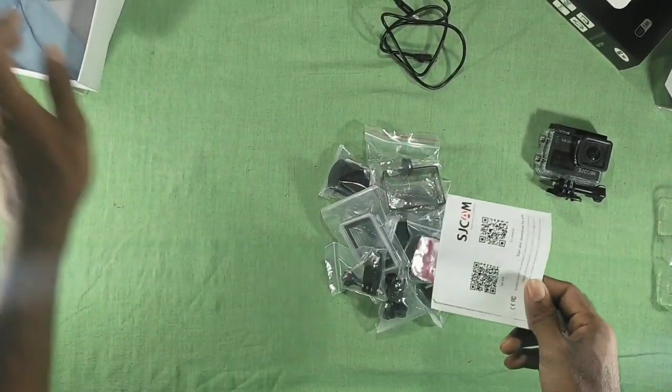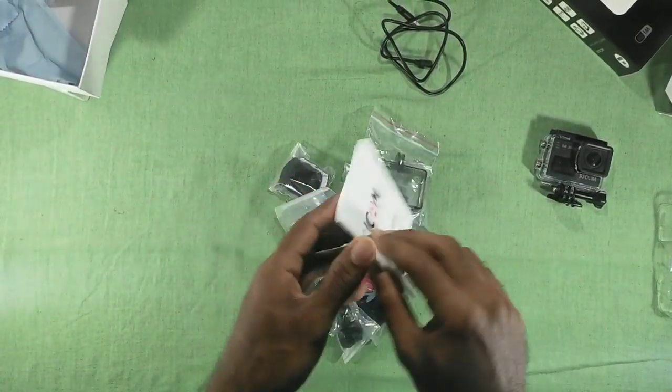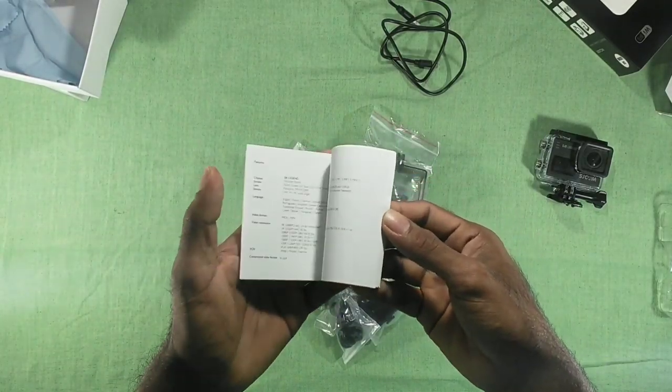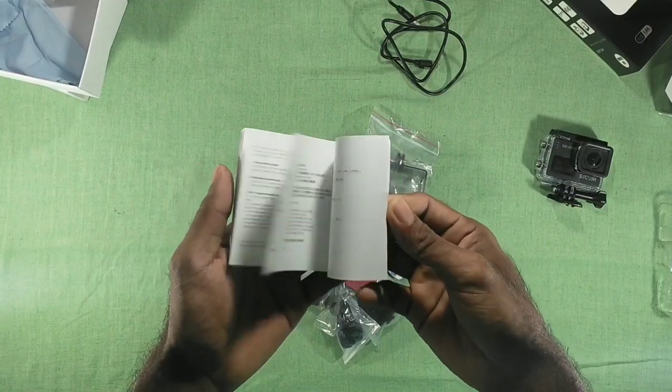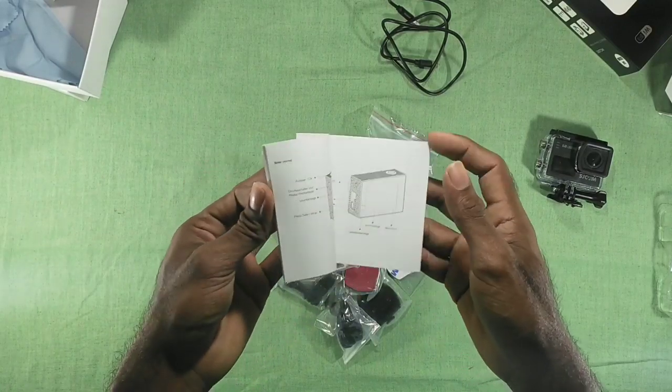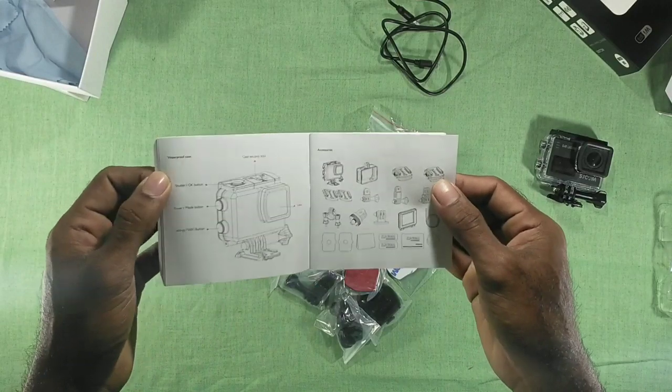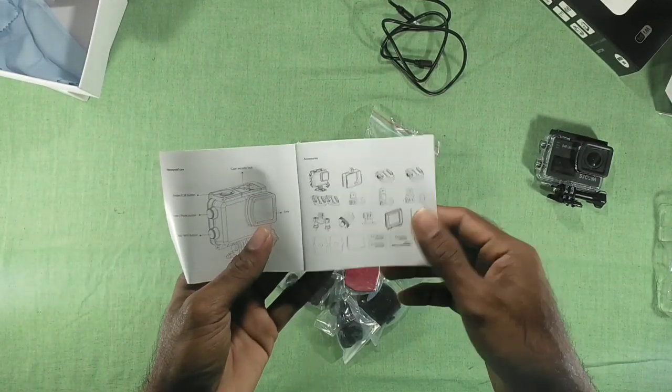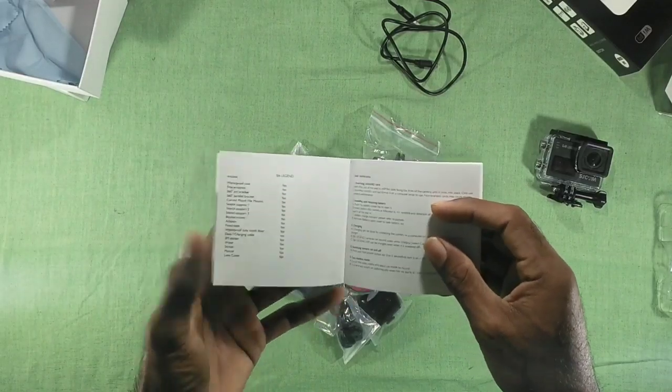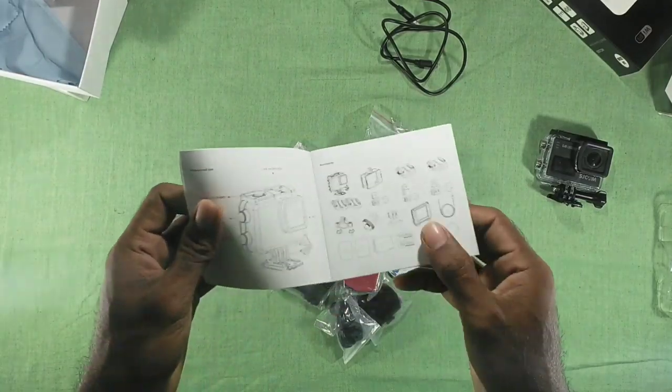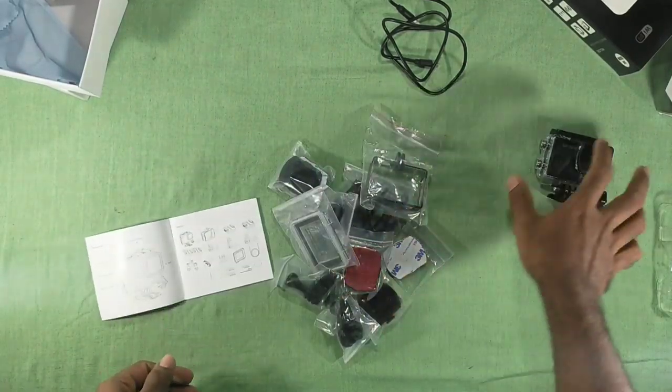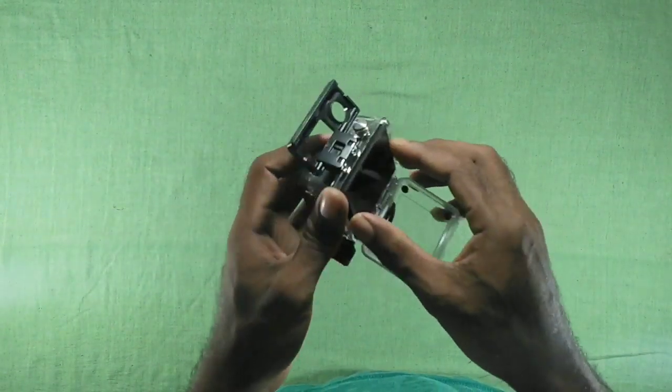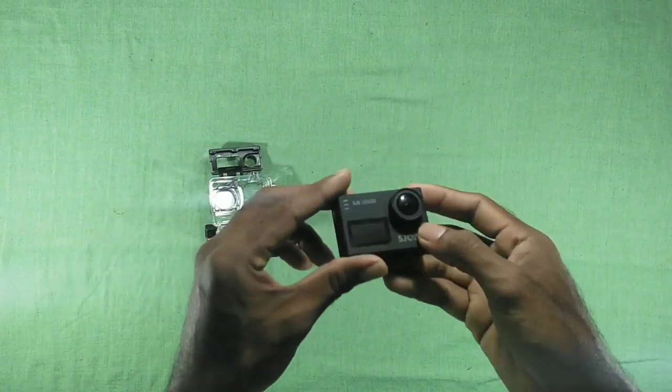Now we'll take a quick look at the guide. SJCAM has described and given the details of the camera and its functions inside the user guide. We can see the accessory list which are provided by SJCAM. Now we will take a closer look at our SJCAM. Let's take this cute little SJCAM right out of the box and see what it looks like.